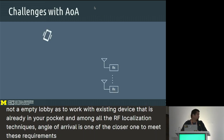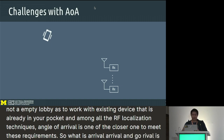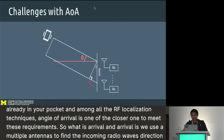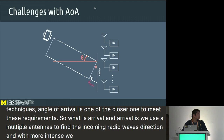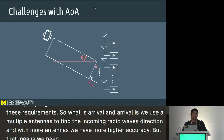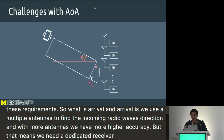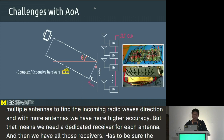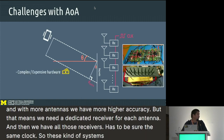So what is angle of arrival? Angle of arrival is where we use multiple antennas to find the incoming radio wave's direction. With more antennas, we have higher accuracy. But that means we need a dedicated receiver for each antenna, and those receivers have to share the same clock — so these systems are super complex and super expensive.